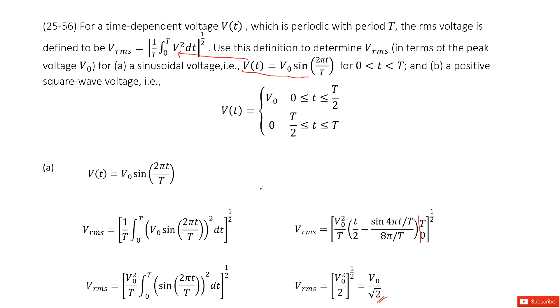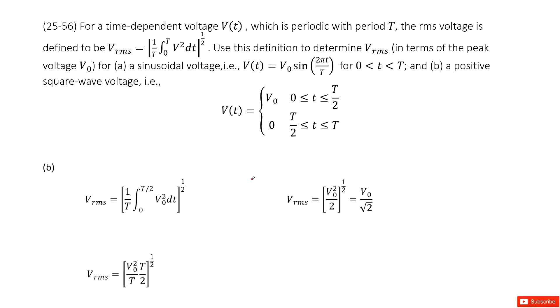The second situation is this time-dependent voltages become positive square wave voltages. And the function looks like this one. So also, very straightforward, you need to input the V(t) in this function.